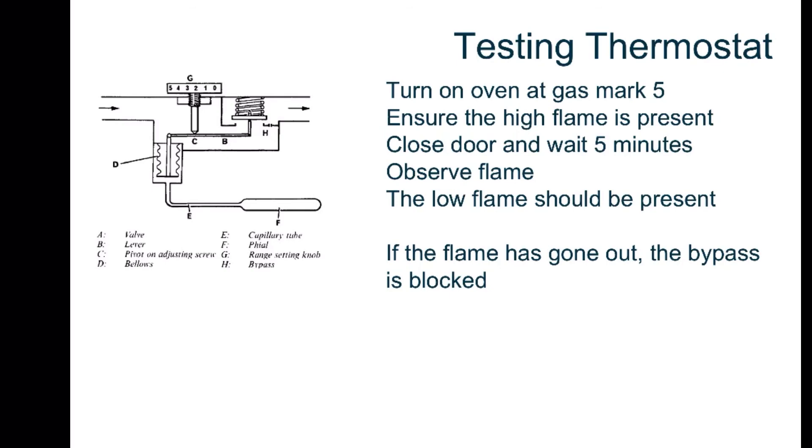Once the high flame is present, you close the door and wait for 5 minutes. During that 5 minutes, the file, which isn't in the flame but in the oven itself, will get warm and should get warm enough to push its piston and close the main gas valve. The only gas that can get through when that happens is through the bypass, giving you a low flame.